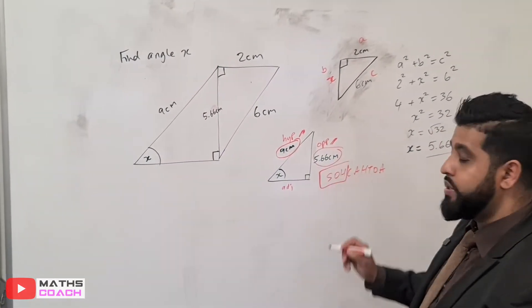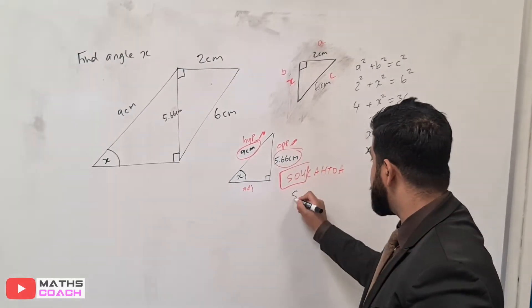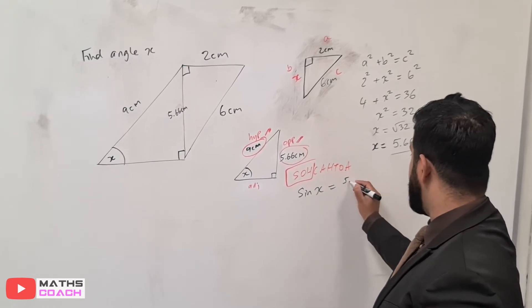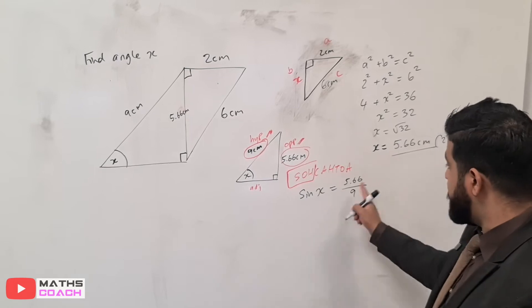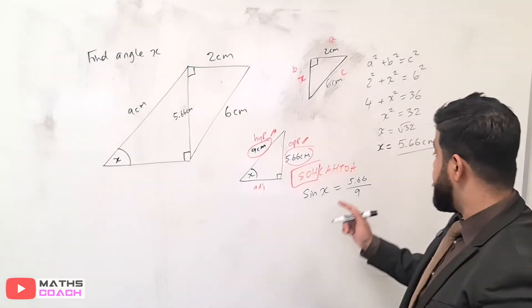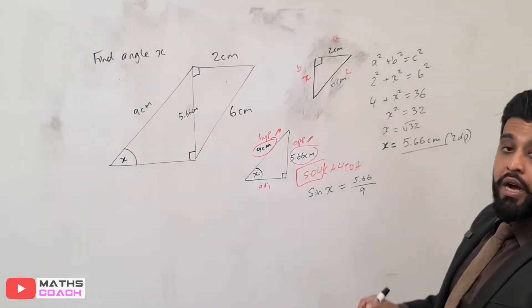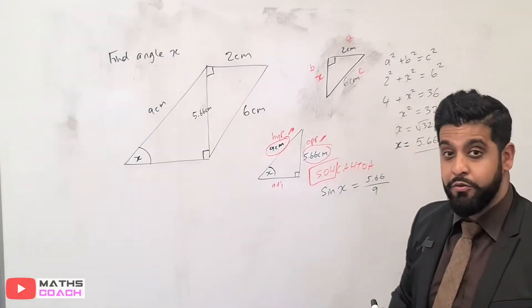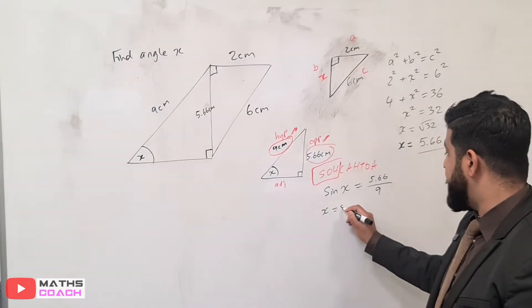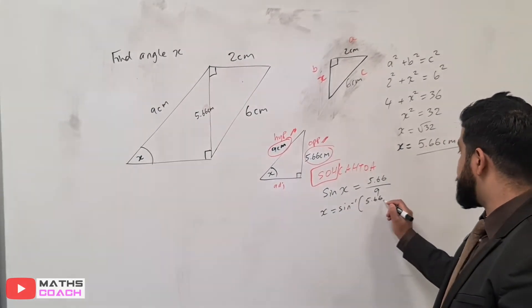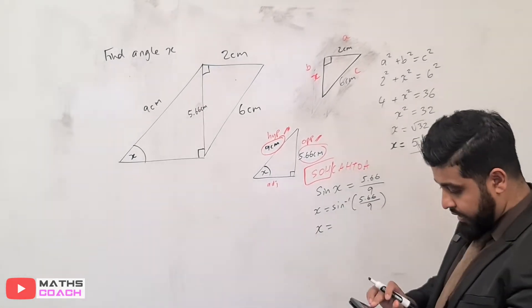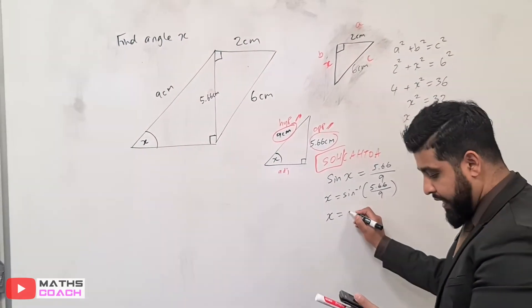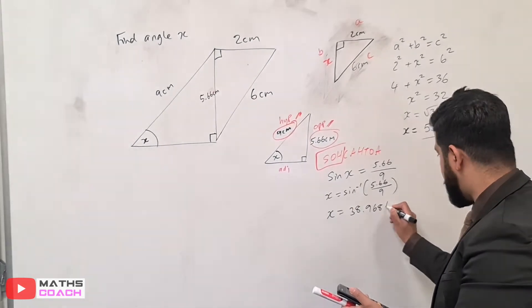Opposite hypotenuse is using sine. Therefore, we can write sine theta, theta is X here, is equal to opposite which is 5.66 over 9. Remember what I said to you earlier that if you did want to keep your answer really accurate, then you can use root 32 here. And that will give you an accurate answer, more accurate than this one because this has been rounded to two decimal places earlier. We are finding the angle, so therefore, inverse sine, 5.66 over 9 and X.